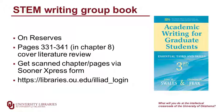We also specifically recommend Academic Writing for Graduate Students. It's used in the STEM writing group that we'll talk about later. It's on reserves, so you can currently get access to it by the Sooner Express form and request pages 331 to 341, or chapter 8, to be scanned and sent to you. When the library physically reopens, you can get it on reserves at the Bizelle circulation desk.